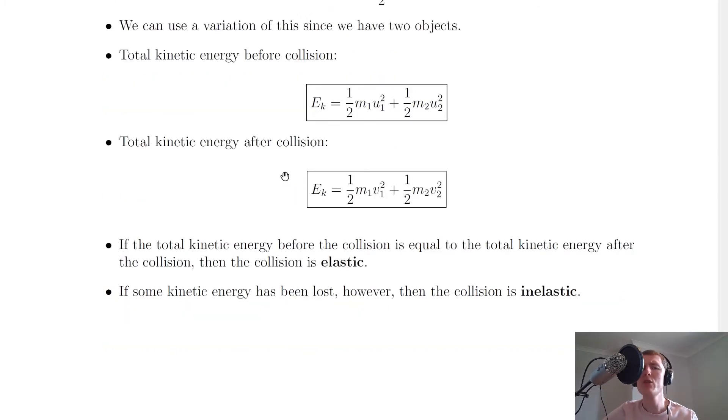The total kinetic energy after the collision, however, is given by Ek equals a half m1 v1 squared plus a half m2 v2 squared. Notice a slight variation because now we're using the masses m1 and m2 of objects 1 and 2 respectively as before, but this time we're using v1 and v2, which are the final velocities of objects 1 and 2 respectively.